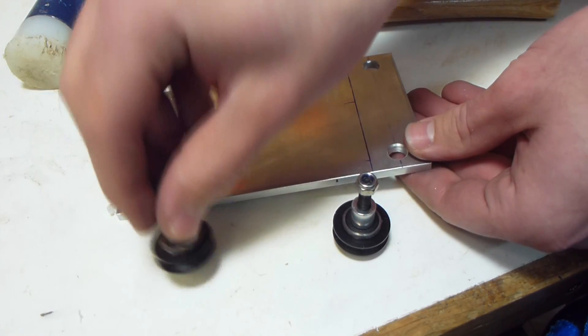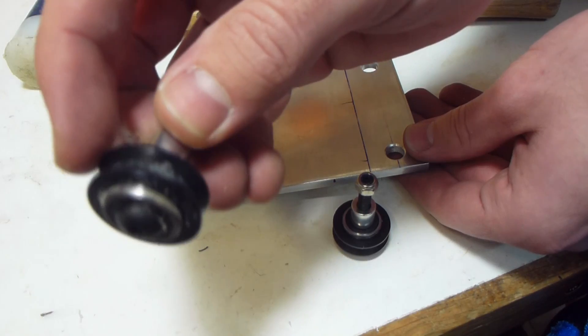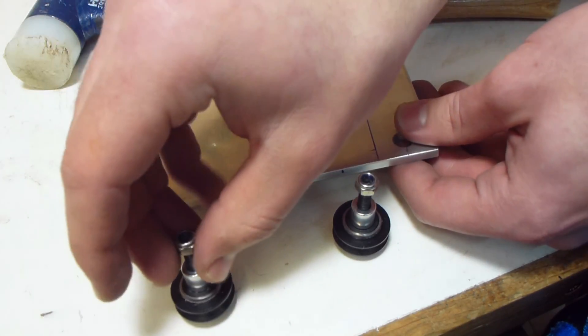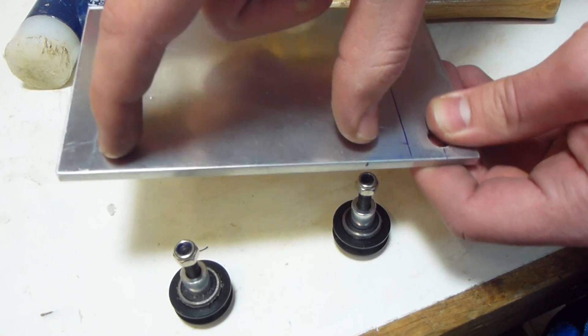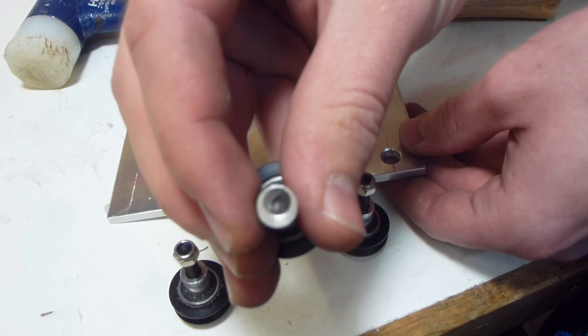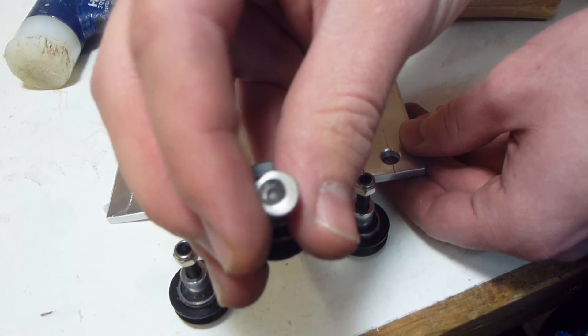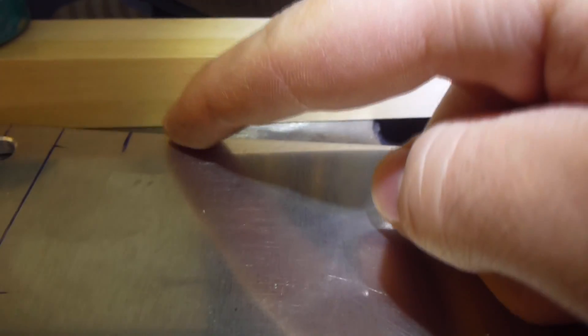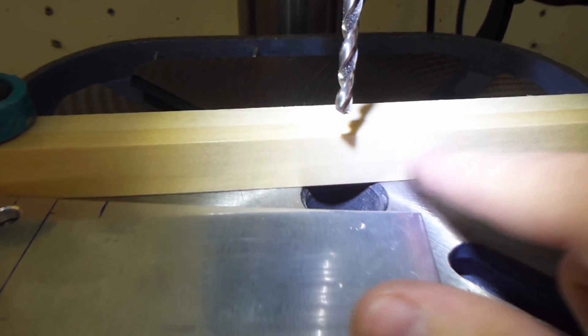The way this whole thing works is there are four of these V wheels and two of them are fixed in place, so they need to be at the exact same distance from this edge here. The other ones don't because they have eccentric nuts and are adjustable. To make sure they have the same distance from the edge I set up a fence on the drill press.